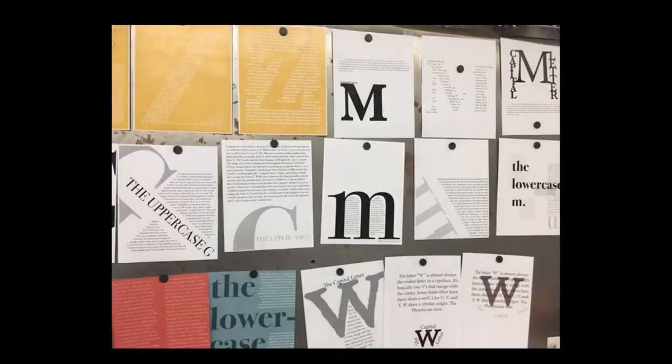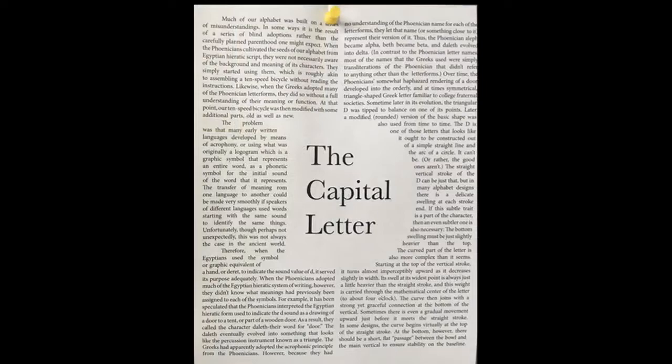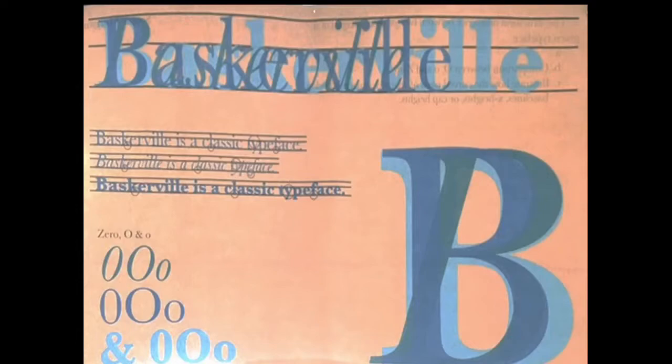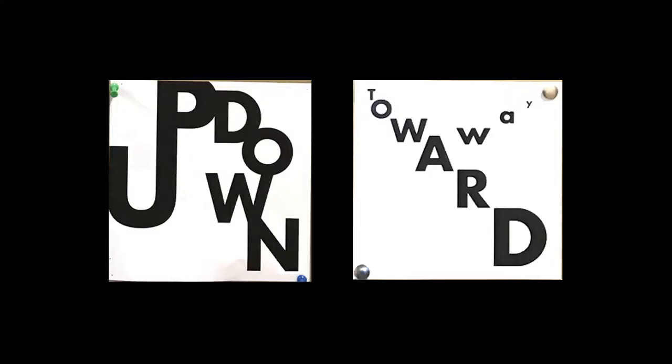Students learn the history of the alphabet by choosing a letter to research, summarize, and then create three designs about that letter. One design has the emphasis on the headline of that letter, the second has the emphasis on the text box, and the third has the emphasis on the letter itself. To understand weights and the specific attributes of each, students create posters about each of the weights in a particular type family.